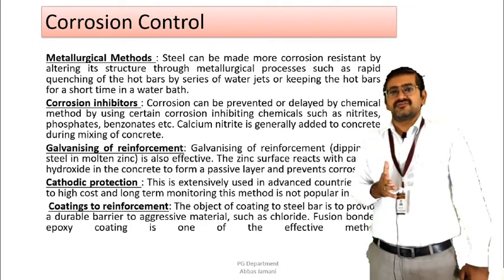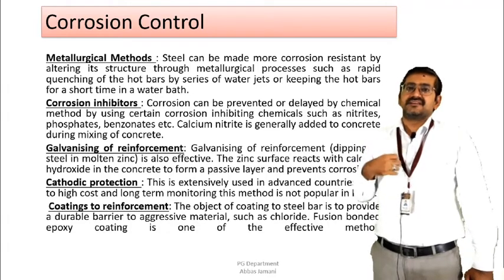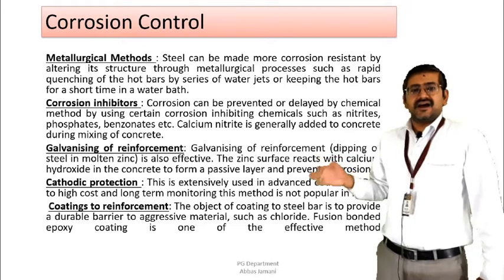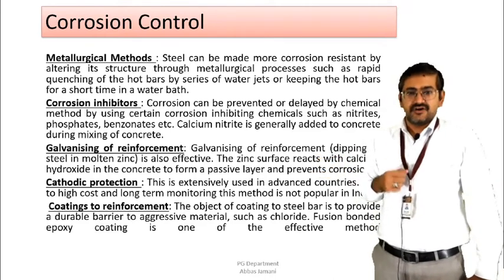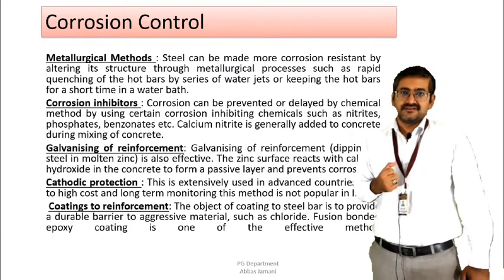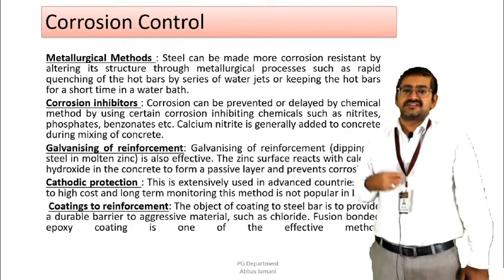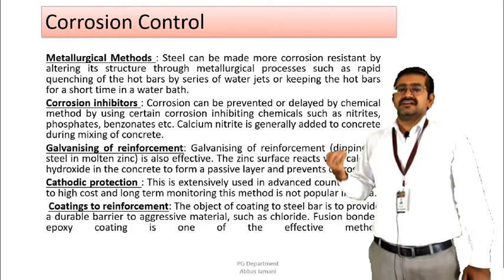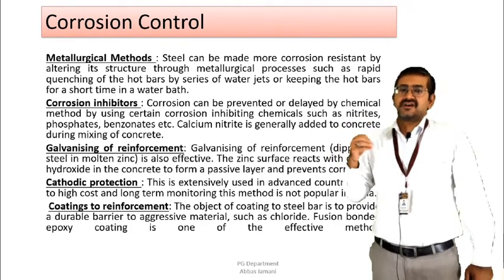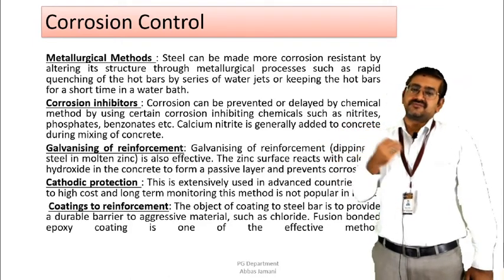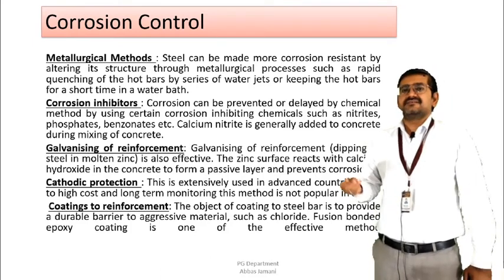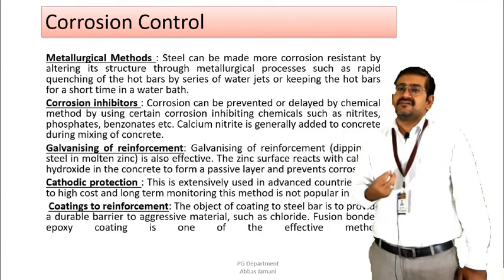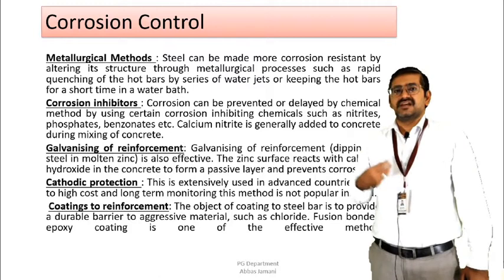The fourth option is cathodic protection. This is an expensive method not generally used in all conditions, but it is a physical process that can control or delay the corrosion of reinforcement. Lastly, the coating of reinforcement introduces an additional barrier, similar to galvanizing. An additional layer above the passive layer must first be broken before the passive layer can be broken and surrounding minerals can contact the reinforcement. Fusion-bonded epoxy coating of reinforcing bars can be done, averting direct contact of the reinforcement surface with the surrounding concrete and delaying the initiation of corrosion for a longer period of time.